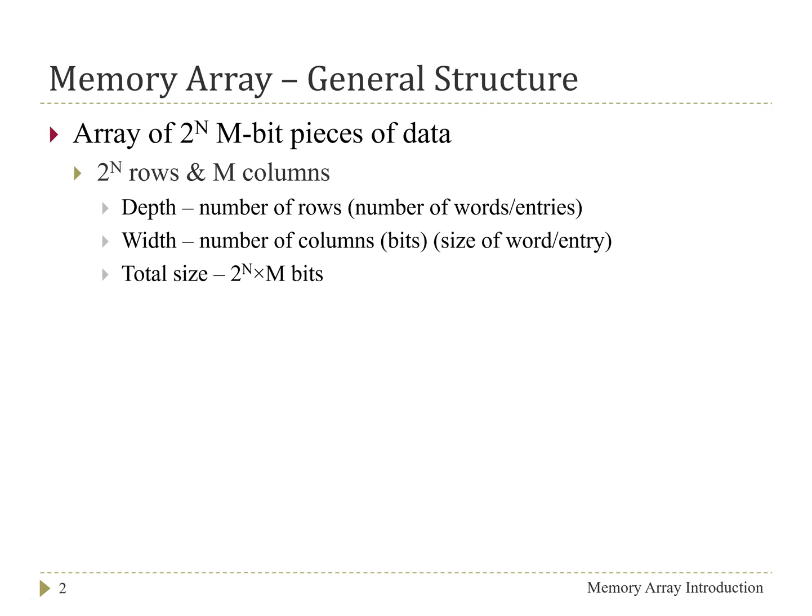And so you might wonder why are we saying 2 to the n rows as opposed to just n rows. And the reason for this is it allows us to easily describe how many bits we need to access the different rows in the array. So with 2 to the n different rows, we need a total of n bits to address the specific entries or the specific rows that we have within the array.